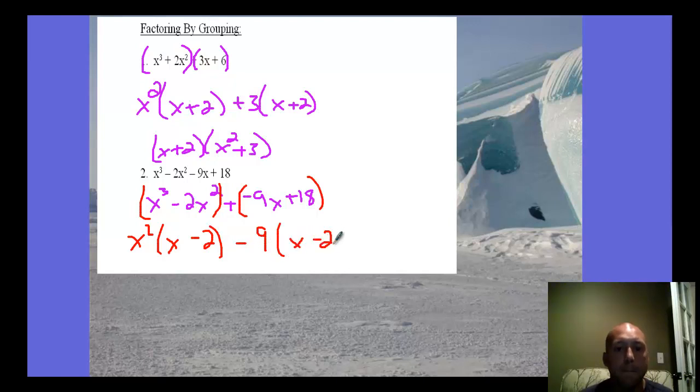Be careful when you pull out a negative. Make sure that the operation still holds: a negative times a negative is positive. Now we can factor out the X minus 2, and we're left with X squared minus 9.